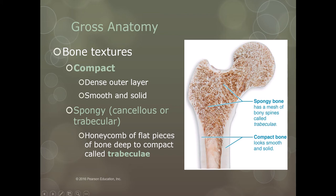The spongy bone is the inner bone and it's essentially a honeycomb. It's made of little flat pieces of bone called spicules or trabeculae, and it's usually deep to the compact bone. It can look like a sponge from the ocean, with that cancellous, honeycomb texture. So compact bone is much more solid looking whereas spongy bone is far more porous.